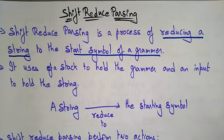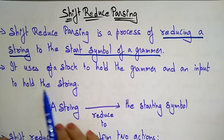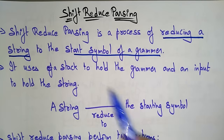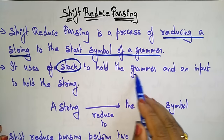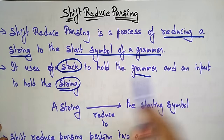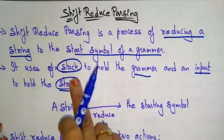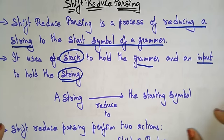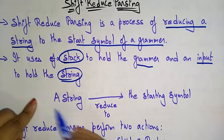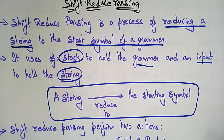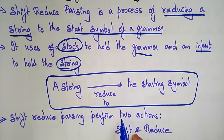Shift-reduce parsing is a process of reducing a string to the start symbol of a grammar. It uses a stack to hold the grammar symbols and an input buffer to hold the string. The stack is used to hold the grammar and the input is used to hold the string. The final goal is that a string has to be reduced to the start symbol.